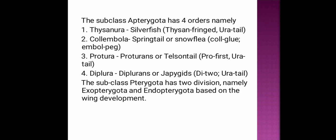One subclass is Apterygota, which is wingless. Primitive condition, no metamorphosis, molting continues in adults. Apterygota has four suborders: Thysanura, Collembola, Protura, and Diplura — only four orders present in Apterygota.